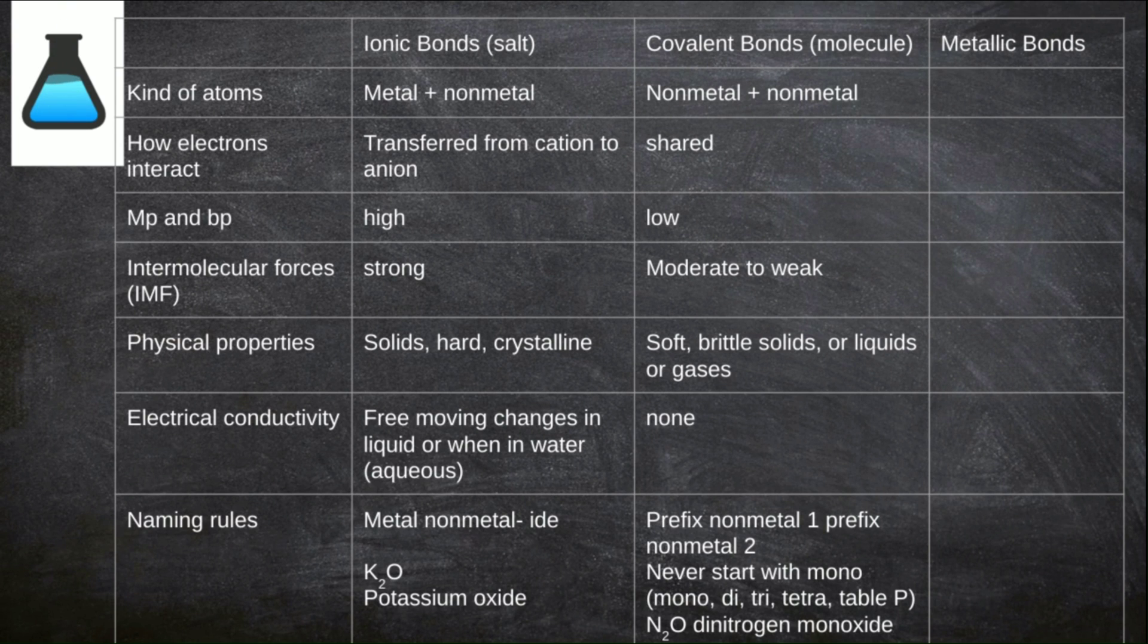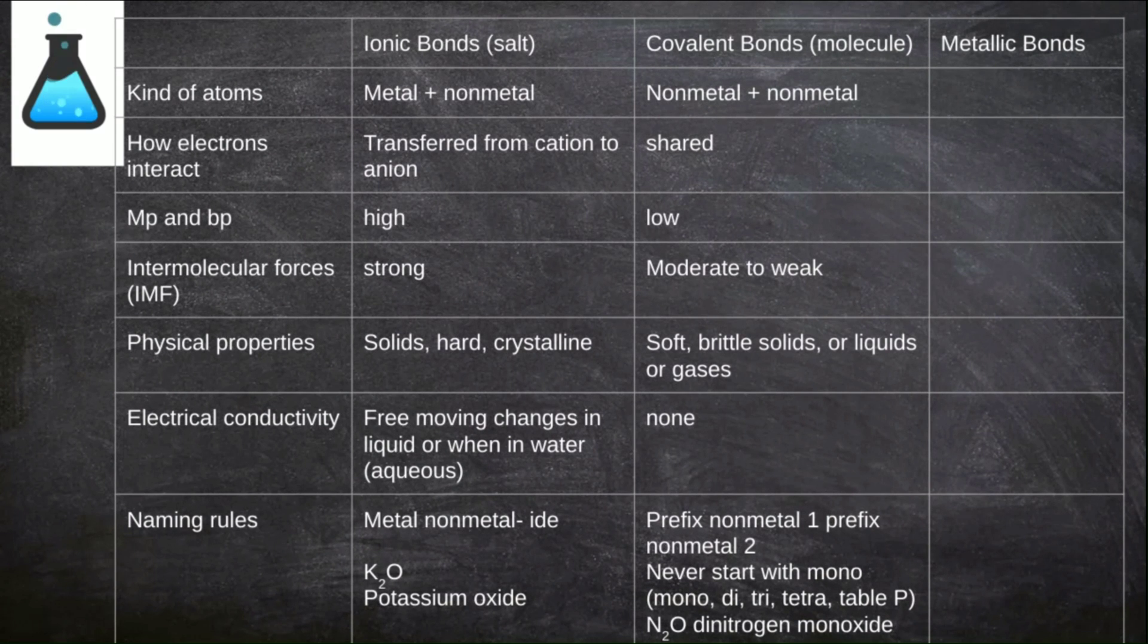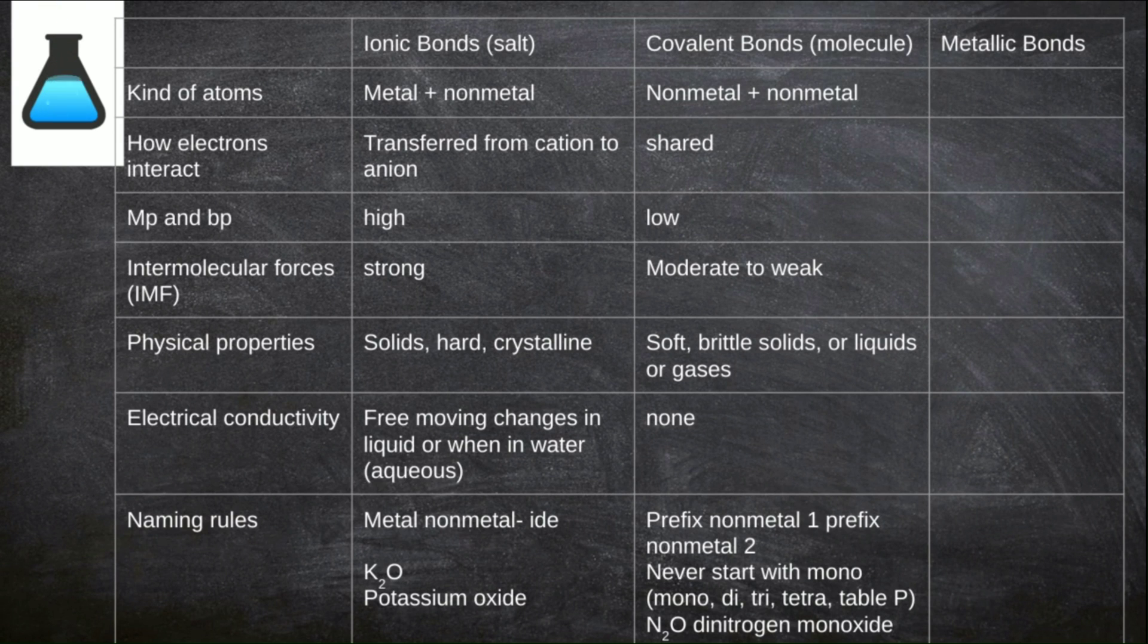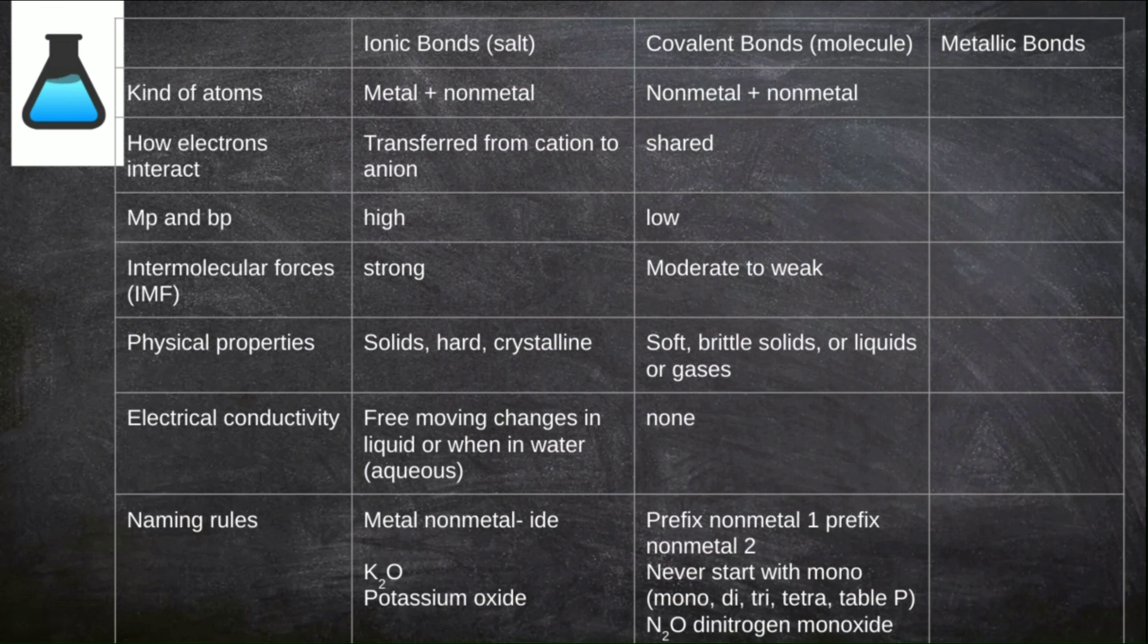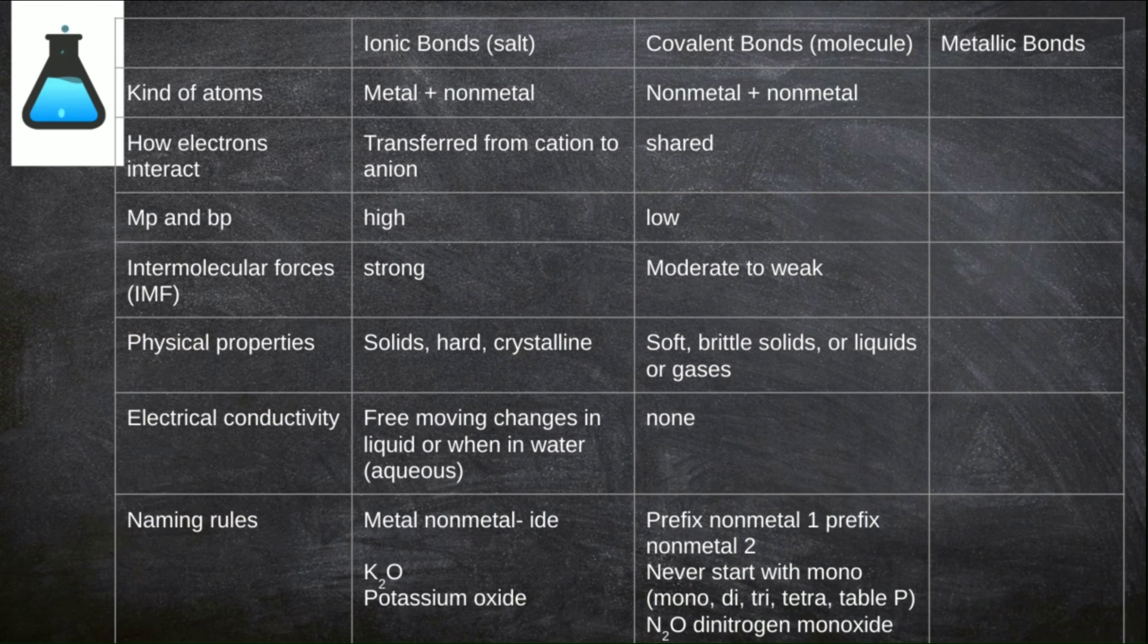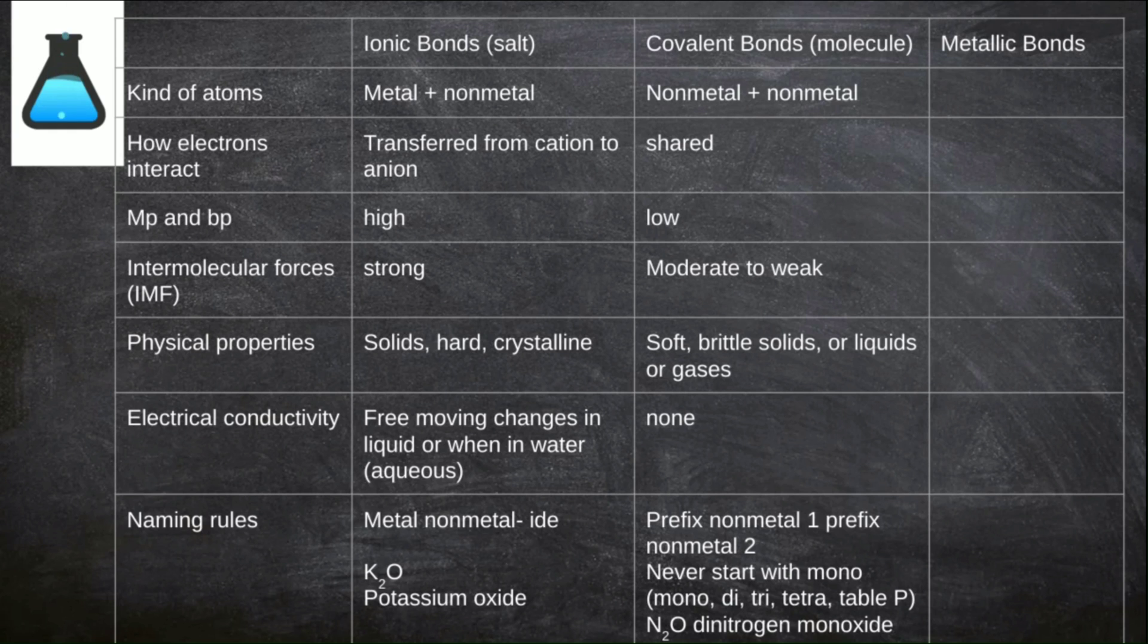One more unique physical property of ionic compounds is that in the liquid or molten state and in the dissolved or aqueous state, these substances have free-moving charges or free-moving ions which allow them to conduct electricity. We say that ionic compounds are electrolytes when they are in the liquid state or when they are dissolved in water, which we also call the aqueous state. To name an ionic compound, we generally name the metal and then the nonmetal, and we change the ending to -ide to signal that we are done with the compound name. Here you can see this formula is called potassium oxide. Nothing in the name indicates the subscripts of the formula.